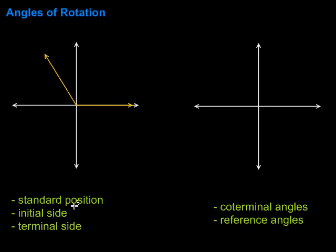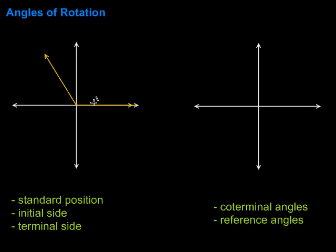To start with, we're going to talk about standard position. Standard position means that the initial side of my angle is right here on the positive x-axis. The other side is called the terminal side, and that's this piece going out from the angle. So this angle is in standard position because the initial side is on the positive x-axis, and the terminal side is the other piece going out there.